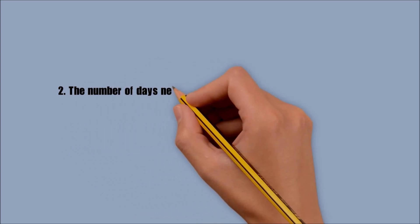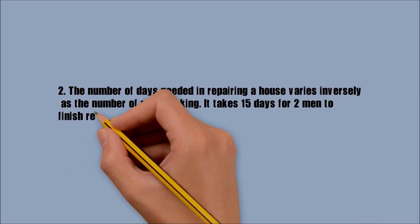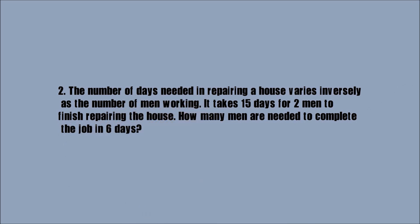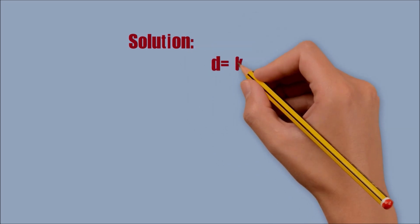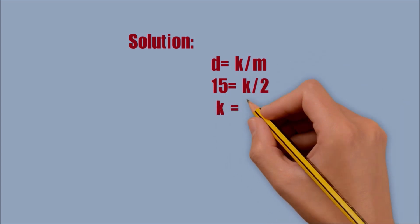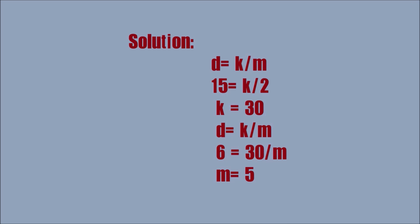Number 4. The number of days needed in repairing a house varies inversely as the number of men working. It takes 15 days for 2 men to finish repairing the house. How many men are needed to complete the job in 6 days?